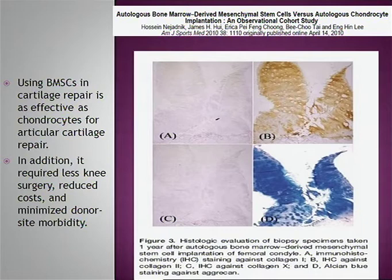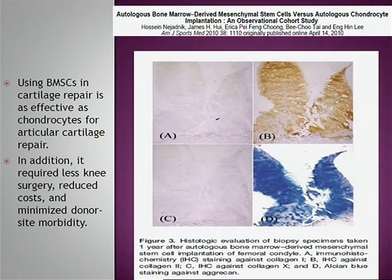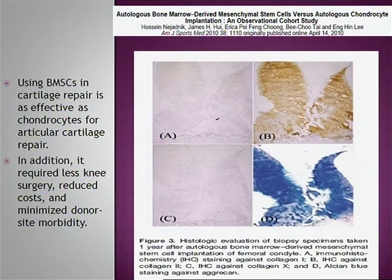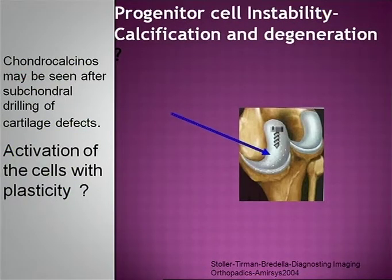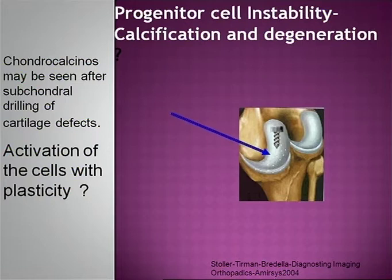In a recently published paper in the American Journal of Sports Medicine, Nejadnik and co-workers showed that bone marrow cells in cartilage repair are as effective as chondrocytes for articular cartilage repair. They argue that less knee surgery is needed because allogenic cells can be used — no second harvest, reduced cost, and minimized donor site morbidity. But is this the cartilage that we want? When I've done drilling or microfracture on patients, some developed chondrocalcinosis, suggesting the cells had undergone plasticity into another lineage — and remember, there were no pure chondrogenic clones from mesenchymal stem cells.